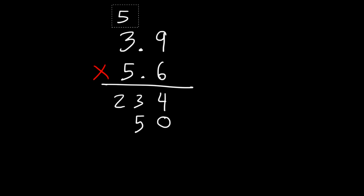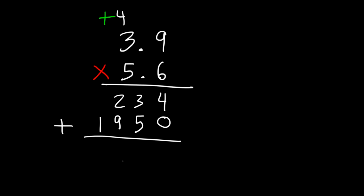Carry over the 4. Next, let's multiply 5 times 3. 5 times 3 is 15, plus 4, that's 19. Now we need to add: 4 plus 0 is 4, 3 plus 5 is 8, 2 plus 9 is 11 — carry over the 1, 1 plus 1 is 2. Now notice that we have two numbers to the right of a decimal point, so our answer should have two numbers to the right of a decimal point. The final answer is 21.84.